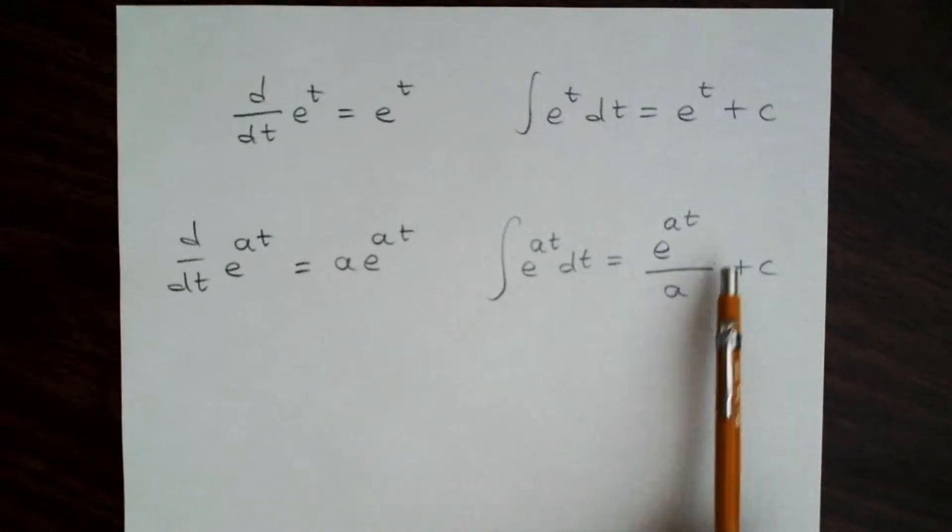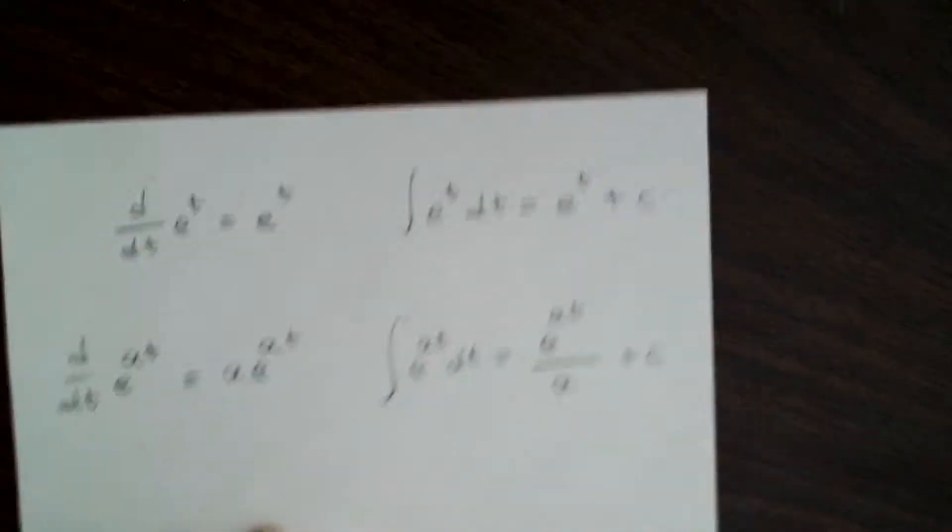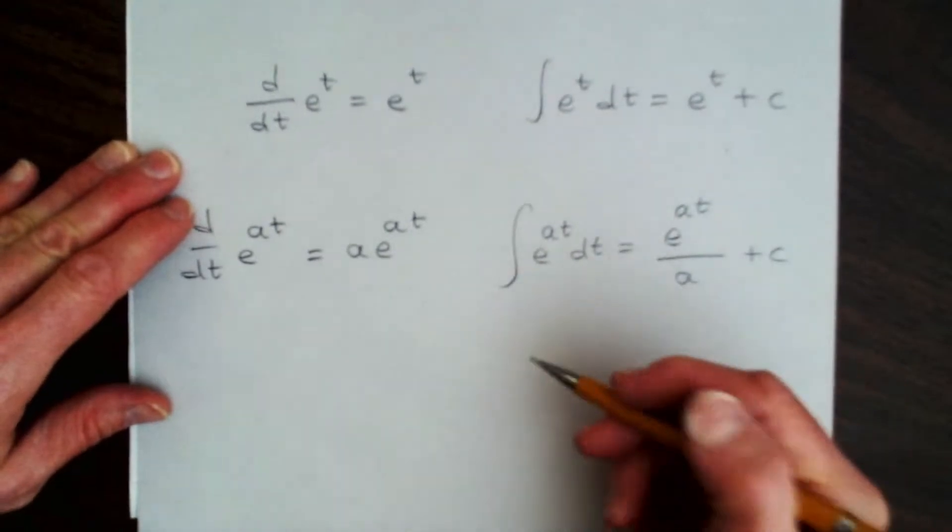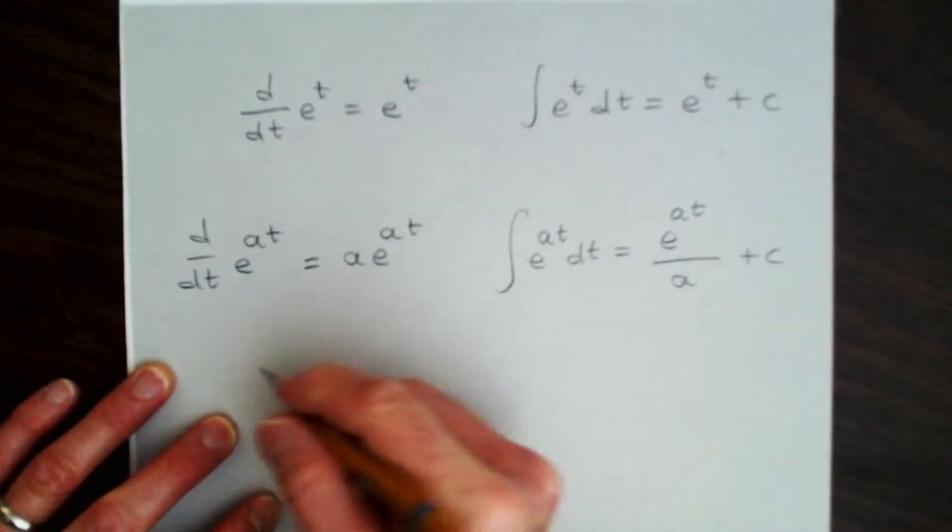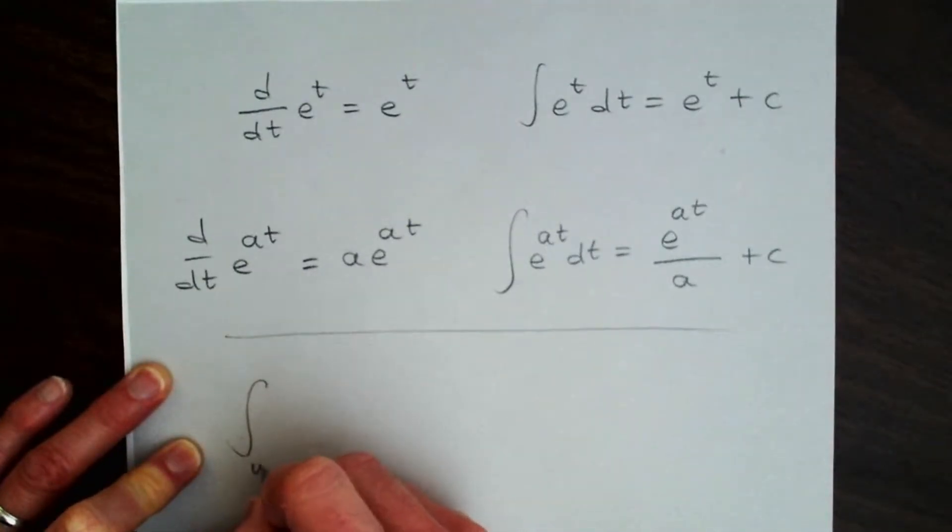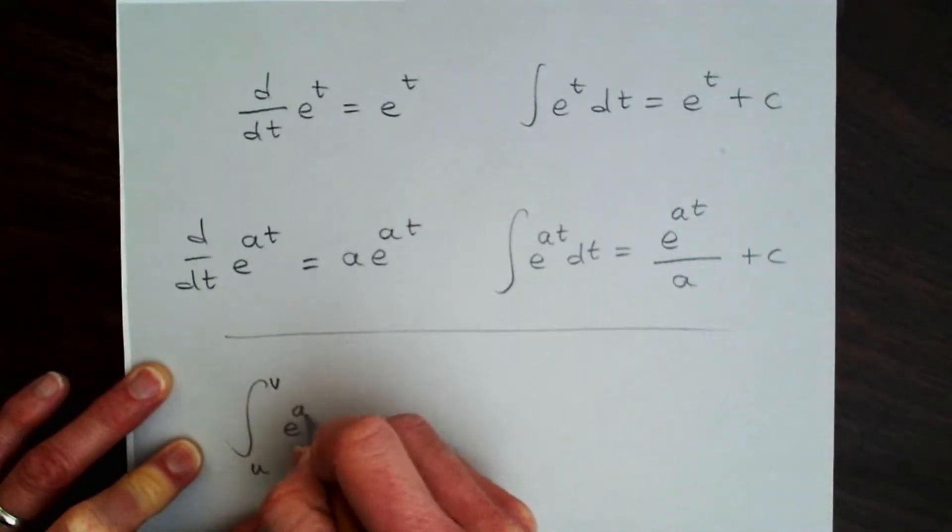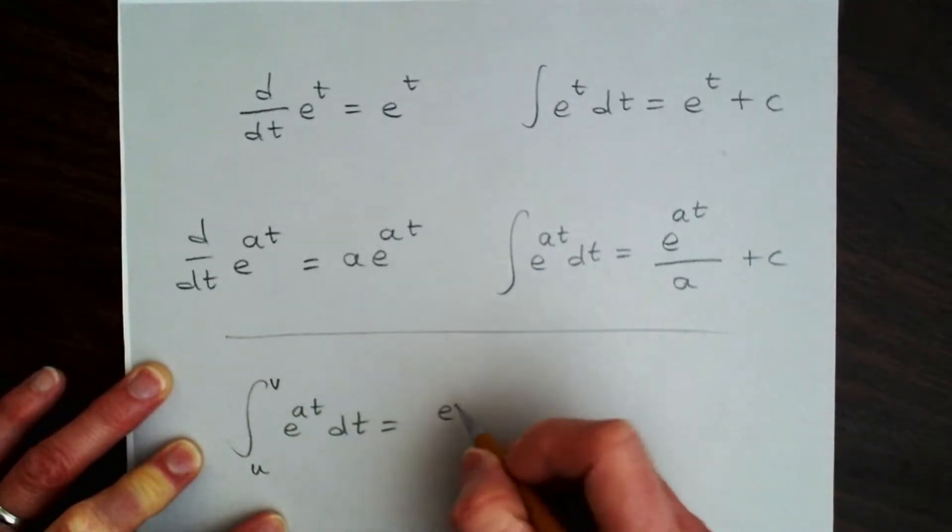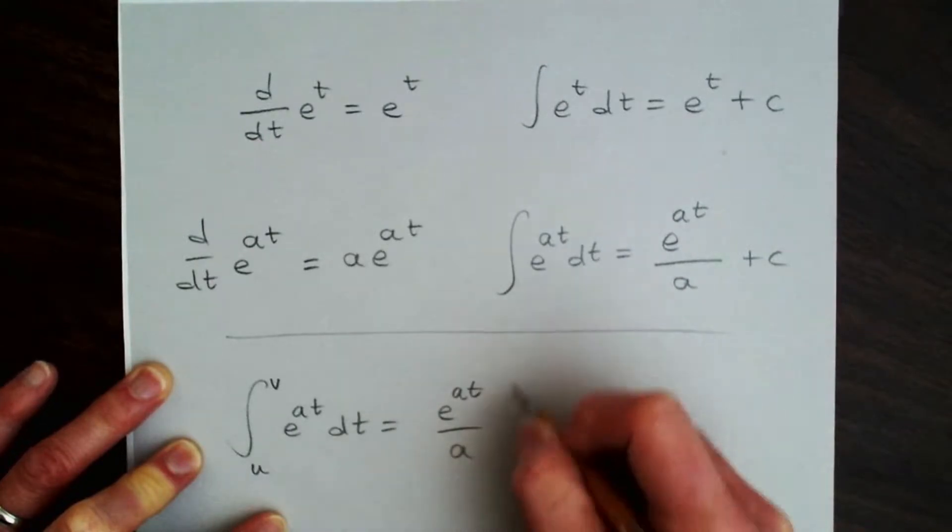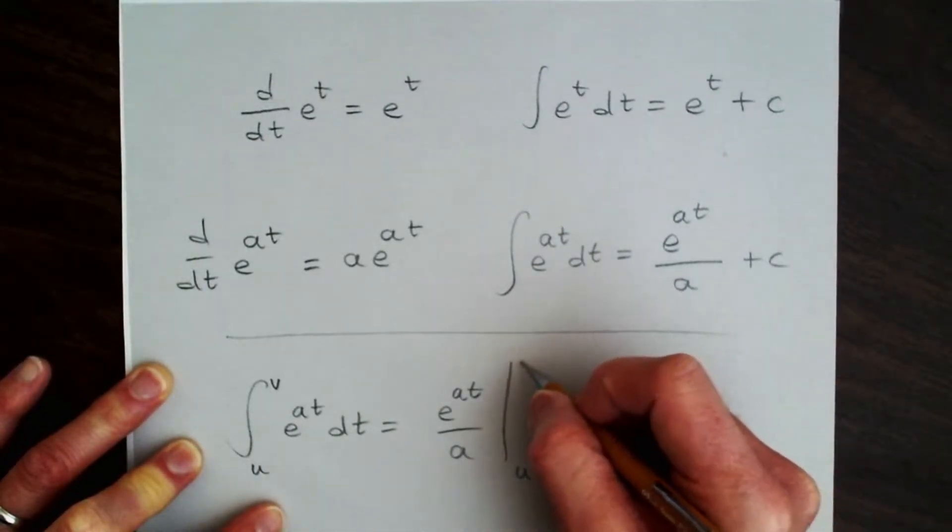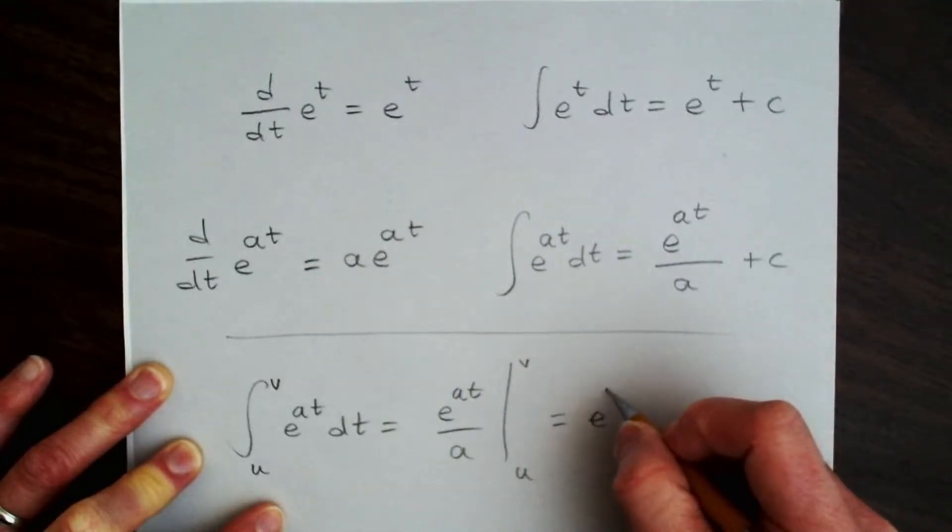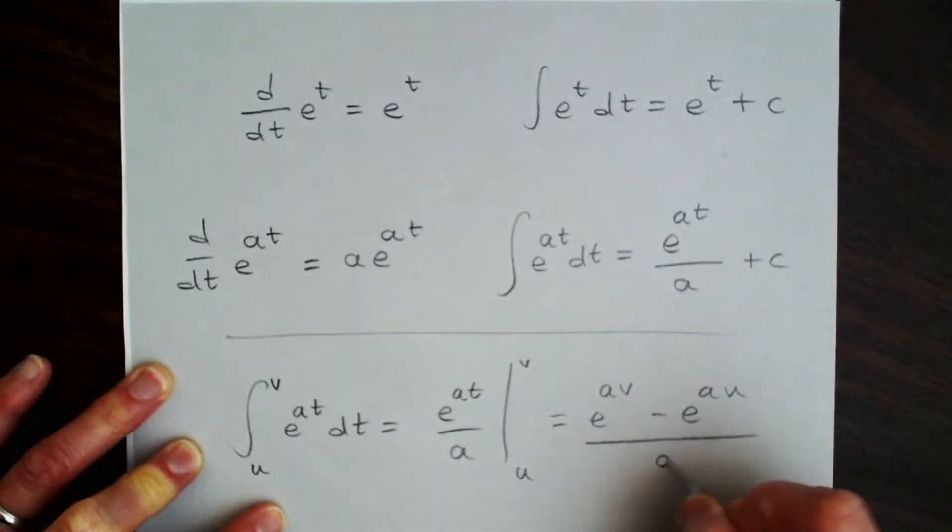And what I want to do is talk a little bit more about this integral, because it comes up a lot in digital signal processing. In particular, let's look at the definite integral. If I have the integral from u to v of e to the at dt, that would turn into e to the at over a, evaluated at t equals u and t equals v. So we'll have e to the av minus e to the au, divided by a.